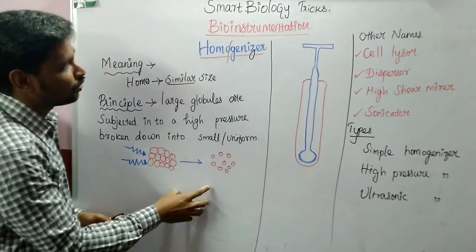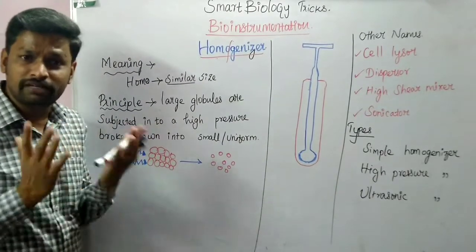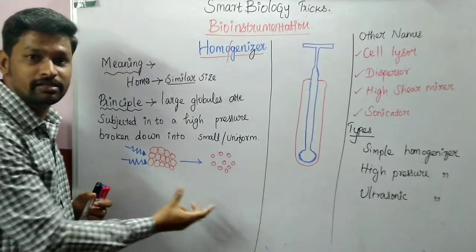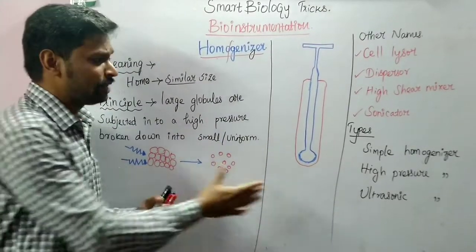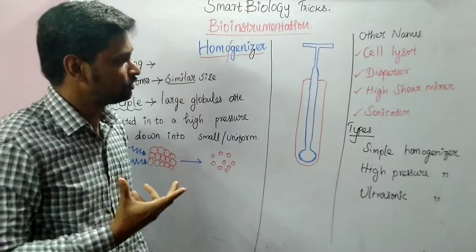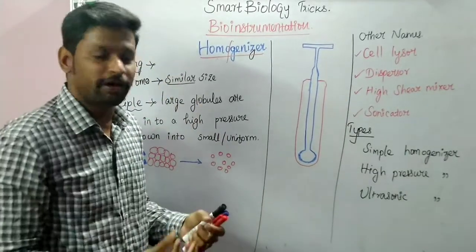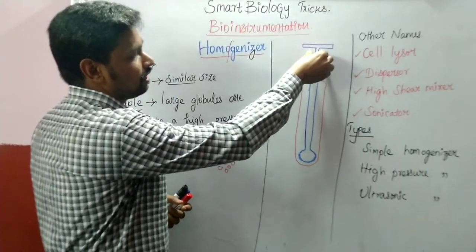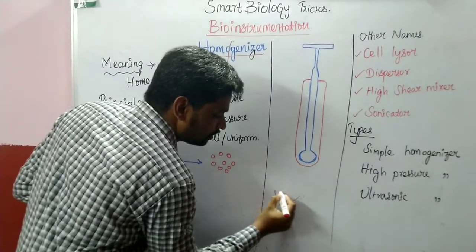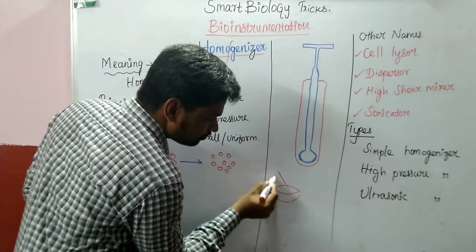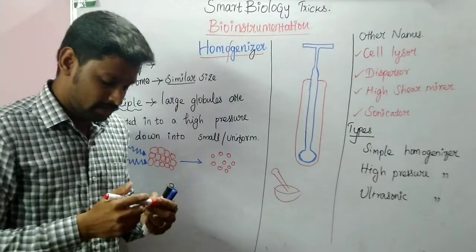The homogenizer instrument is used to convert larger and complex tissues into smaller and uniform materials. The basic homogenizer is a small laboratory equipment made up of glassware. For example, the glassware at the bottom appears like a test tube, and it also contains a pestle — similar to mortar and pestle used for grinding medicinal plants.